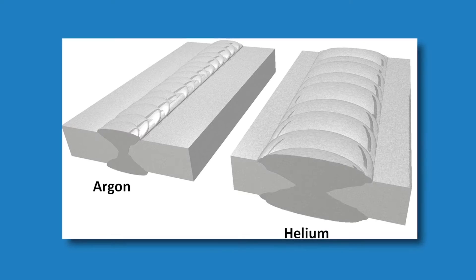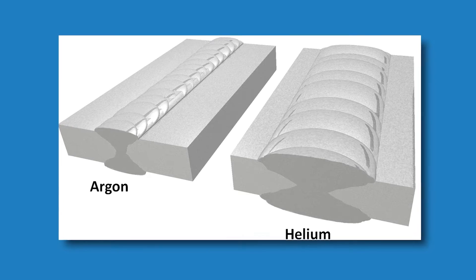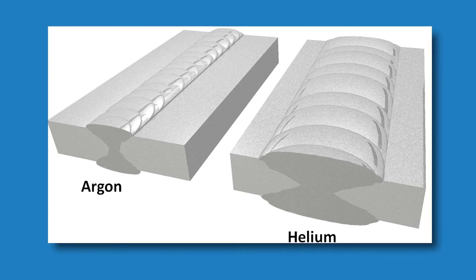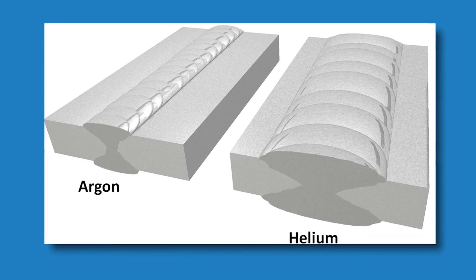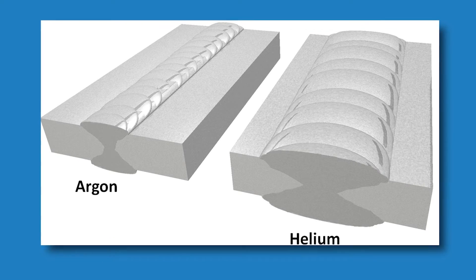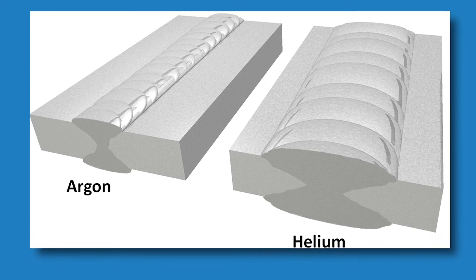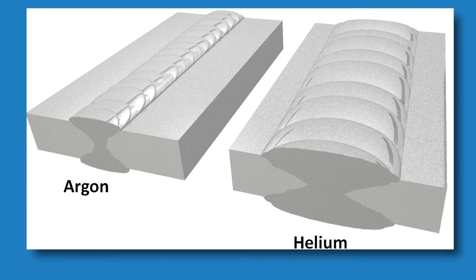Shielding gas selection can also help with this issue. Adding helium to your gas mixture can provide more heat when it ionizes. Due to the high thermal conductivity of aluminum and the higher melting temperature of aluminum oxide, this extra heat will provide broader penetration which will ensure fusion.